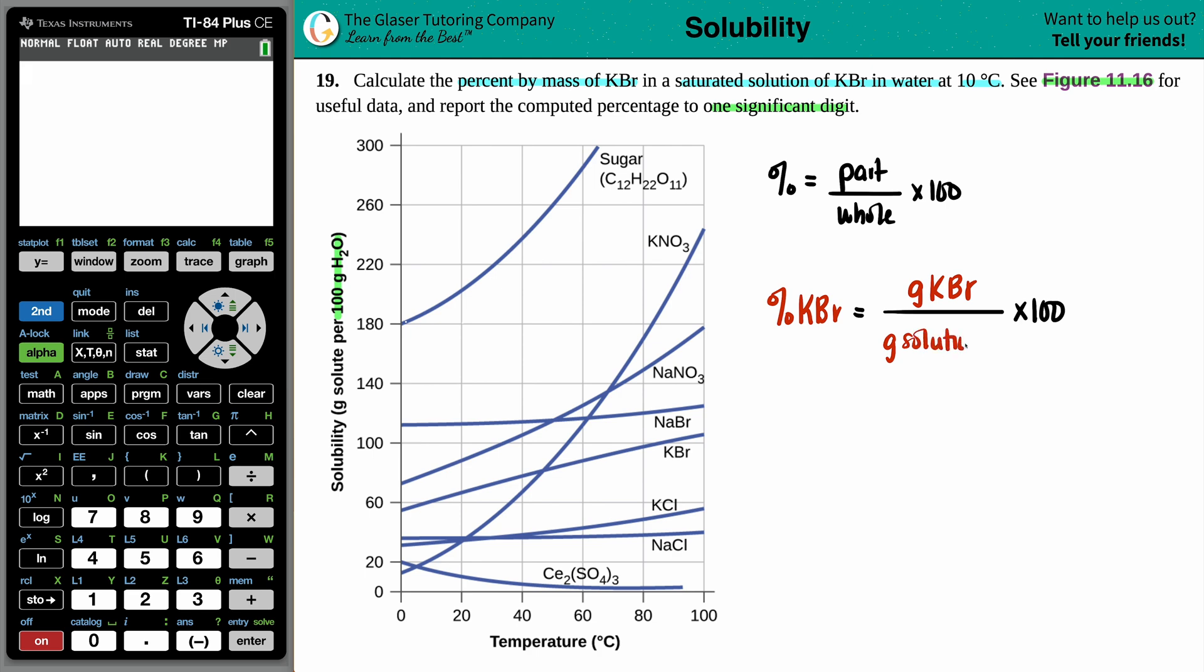And a mass is always in terms of grams. So we want grams of KBR divided by the whole entire amount of the solution. So we'll just say grams of the solution. Keep in mind that when you're talking about something as a whole, and you're talking about aqueous information, the solution is the entire thing because you have three S's,